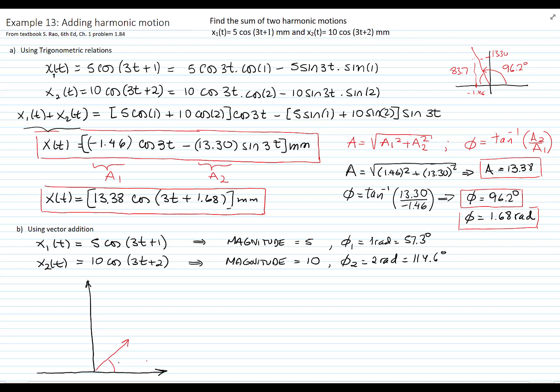This is a magnitude of 5 and a phase angle of 57.3. So I will draw my other vector, which is of magnitude of 10, so it's a little bit bigger, and the angle is 114.6 from the horizontal axis. So I will complete my parallelogram. And the resultant force, as you recall, is from the origin to the other tip of the parallelogram.